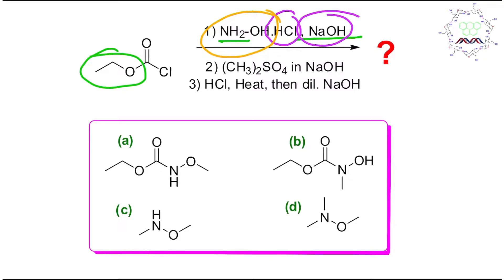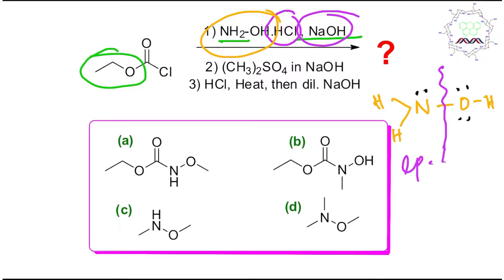We know hydroxylamine is a pretty strong nucleophile because of the alpha effect. This is the structure of hydroxylamine — there are lone pairs on nitrogen and two lone pairs on oxygen. There is significant lone pair–lone pair repulsion between oxygen and nitrogen. This is called the alpha effect, and it makes hydroxylamine a significantly good nucleophile.